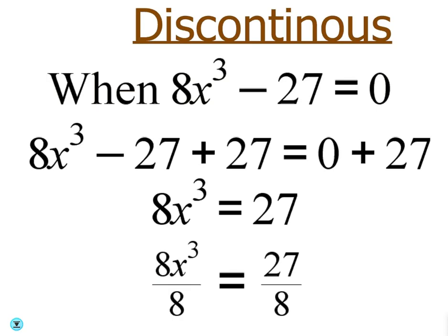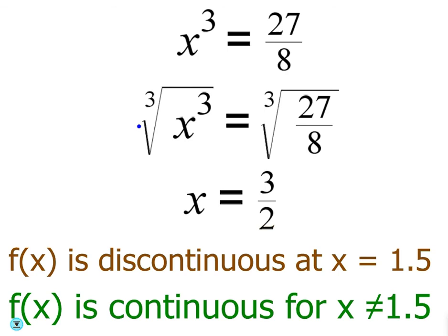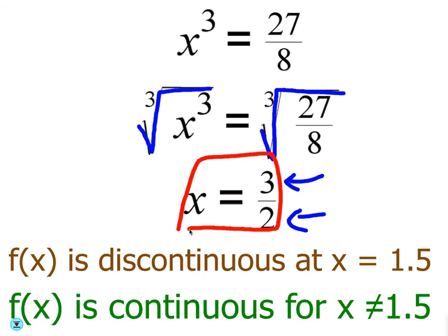So, I'm going to take 8x cubed minus 27, set it equal to 0. Now, believe it or not, this one's actually easier than it looks. You don't have to do difference of cubes. You can just add 27 to both sides and then divide by 8, and then take the cube root. I'll give you a second to get this copied. All right. So, you're going to add 27 to both sides, and then divide by 8. Then, once you do that, you take the cube root of both sides to get rid of the x cubed. Cube root of 27 is 3. Cube root of 8 is 2. So, it's discontinuous at x equals 3 halves or at x equals 1.5.